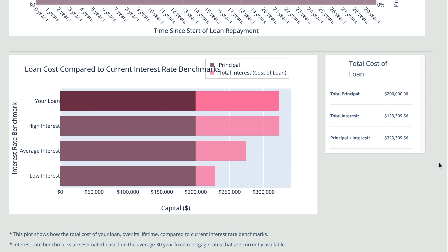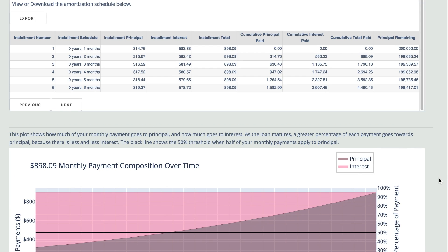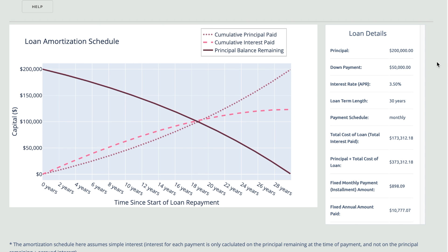Pulling things back, we can see a detailed breakdown of the cost of your loan and other loan specific information, including the total cost of loan, principal, and fixed annual amount paid.